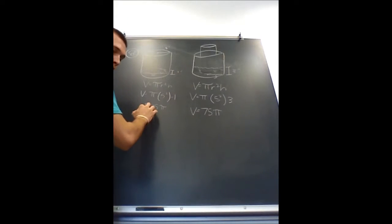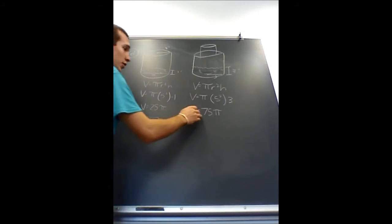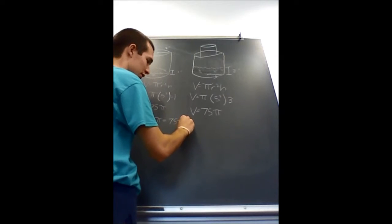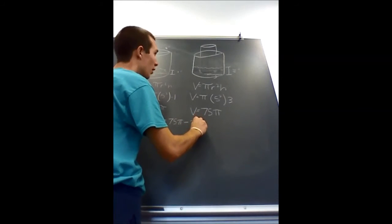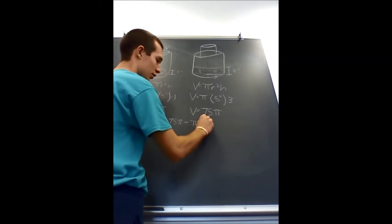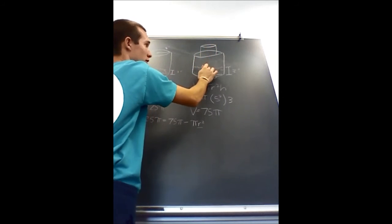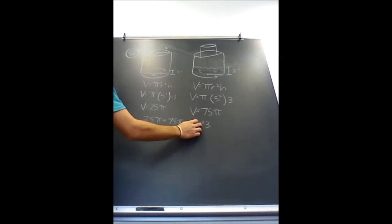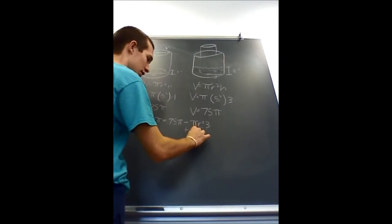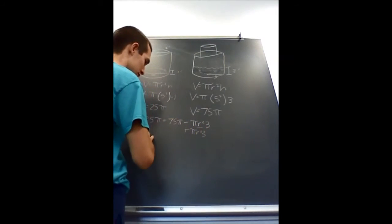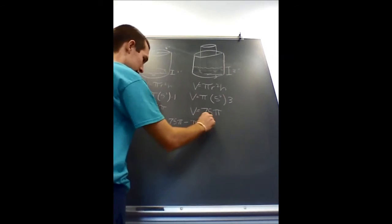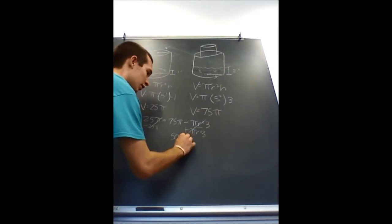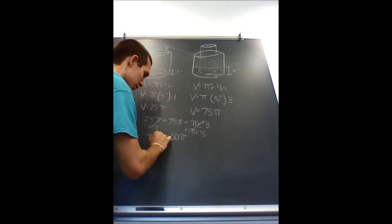So if you take the volume of the smaller pot, or of the larger pot, and set it equal to the volume of both minus the volume of an unknown radius of the pot that was put into the larger pot with height 3, we'll be able to determine the radius. So if you just add that over to the other side and subtract 25 pi, you get 50 pi is equal to pi r squared 3.